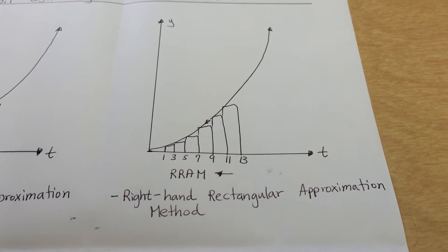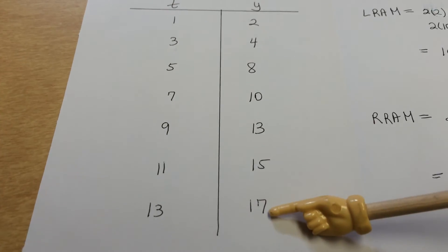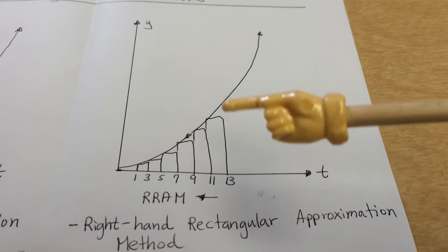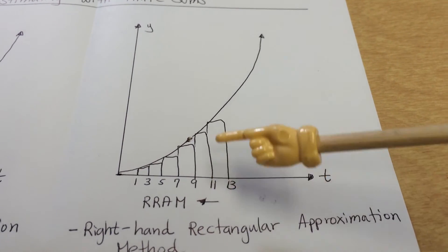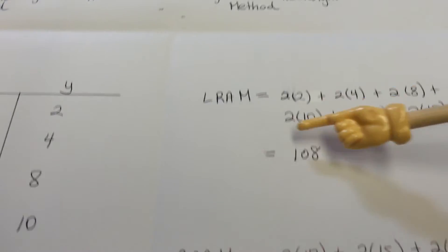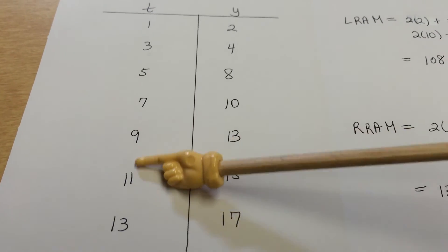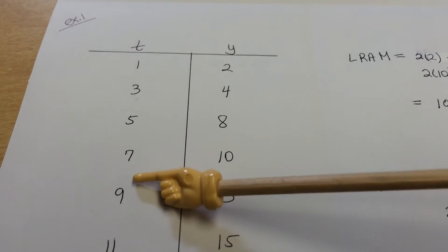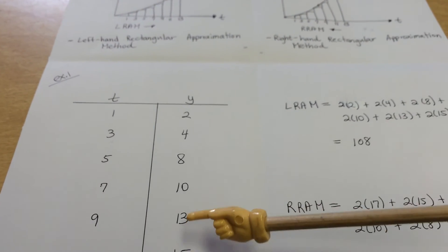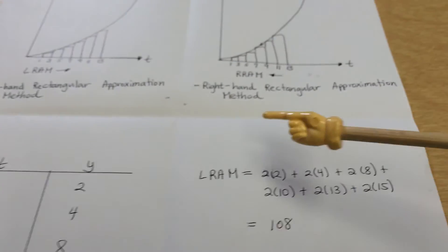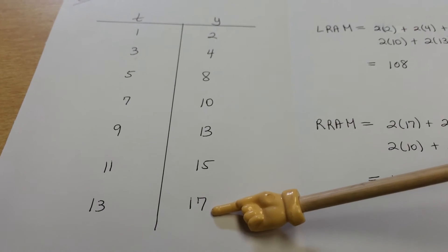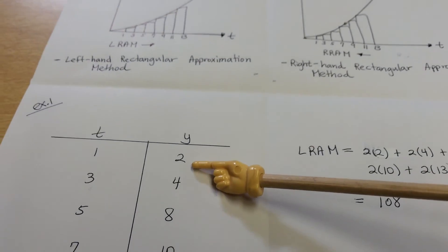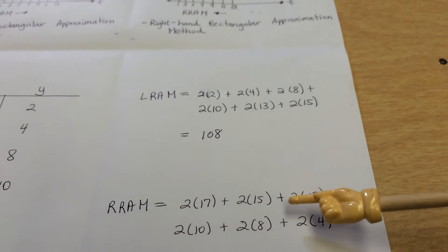Then we do the right-hand sum, the RRAM. Right-hand means you do the opposite direction — start from the bottom right, where the base is two and the height is 17. Between 13 and 11, that's a base of two with height 17. Then base two times 15, then base two times 13, and so on, working all the way through. We don't include the height of two at the far left end. When we do this calculation, it comes to 134 — noticeably different from the LRAM result of 108.